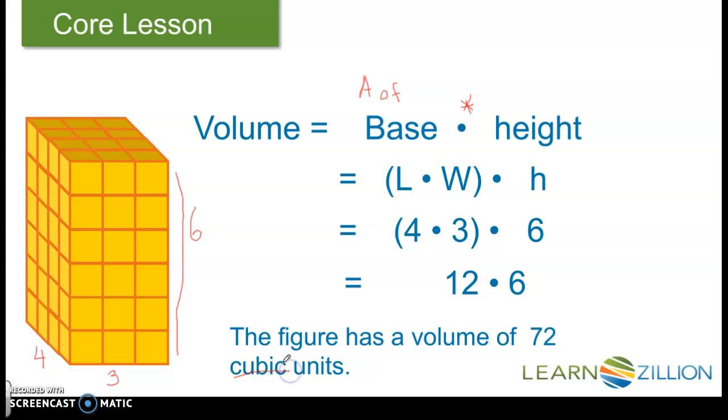Cubic units means because there are three dimensions. If you just write 72 units, that's incorrect. You have to say cubic units. Now, units could be inches, centimeters, meters, yards, any kind of unit of measure. Right now, they're not telling us a specific unit of measure, so we just say units.